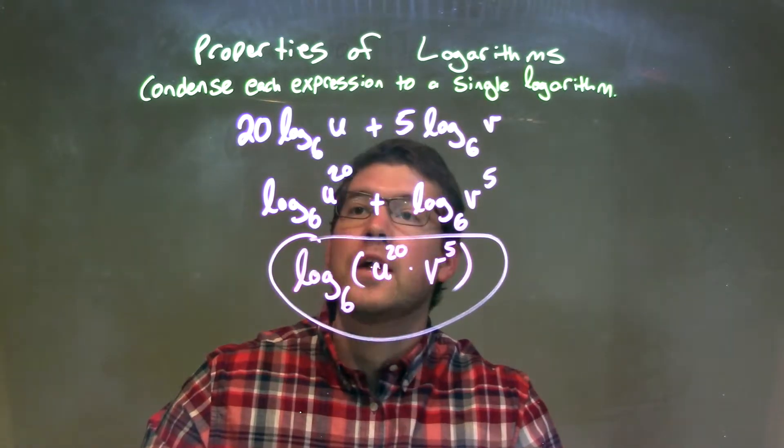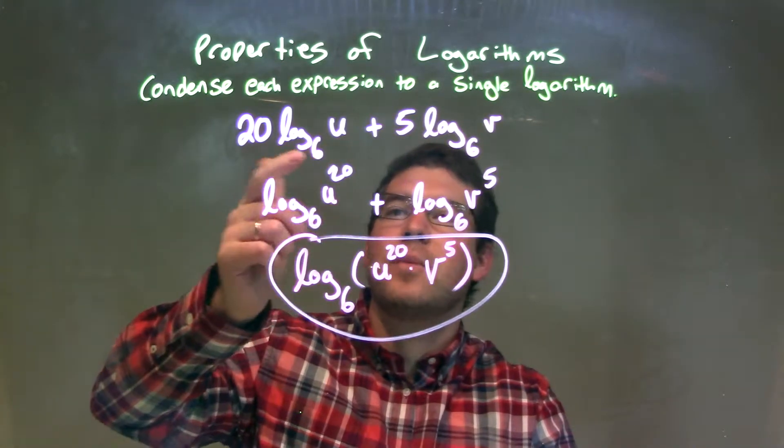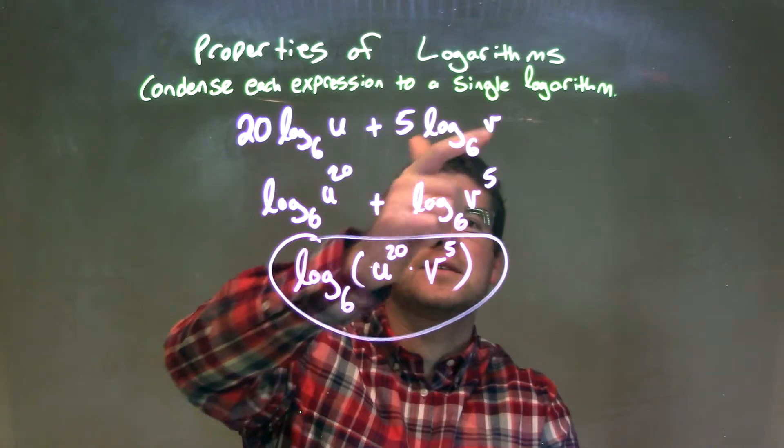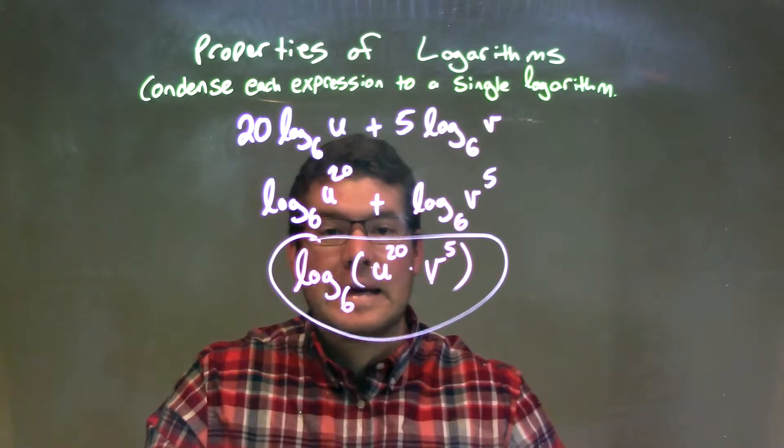So let's recount. We're given 20 log base 6 of u plus 5 log base 6 of v, and we want to condense that.